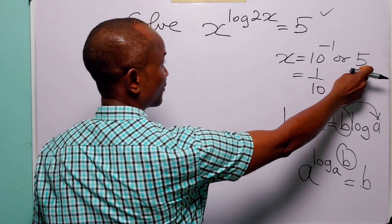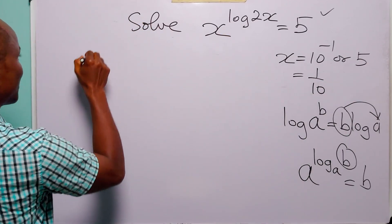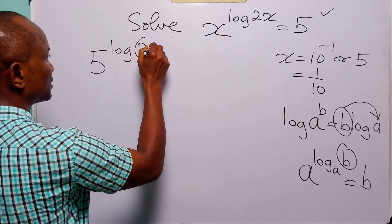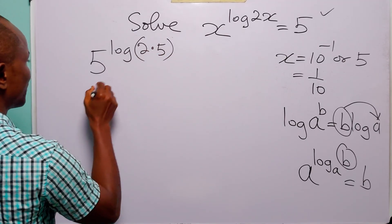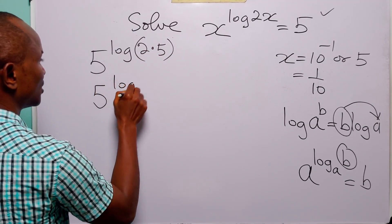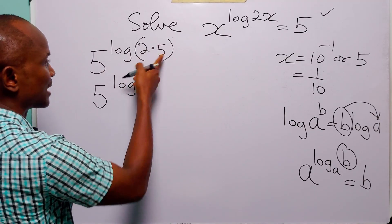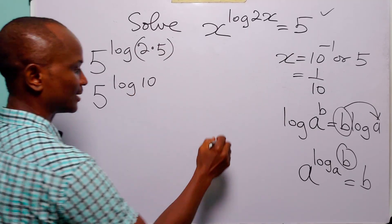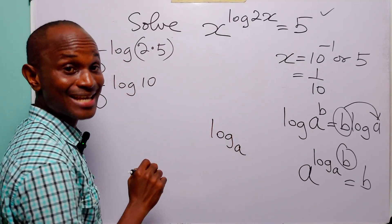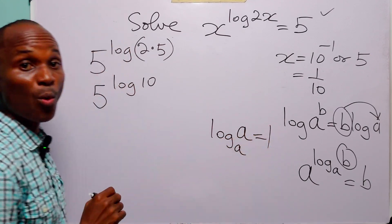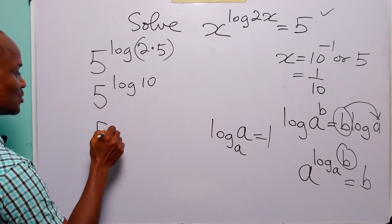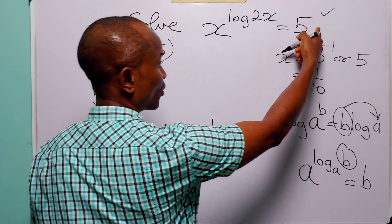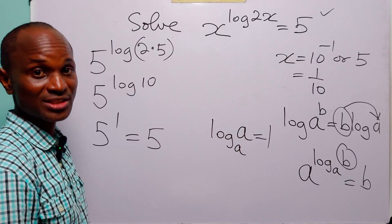Substituting x = 5 into the exponential equation, we have 5 to the power log(2 times 5), which is 5 to the power log 10. Since we are working in base 10, log base 10 of 10 equals 1. So this is 5 to the power 1, which equals 5 — exactly what we have on the right-hand side of the original exponential equation.